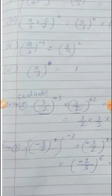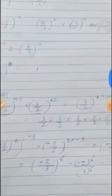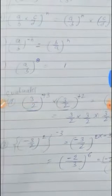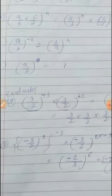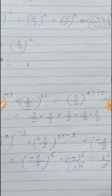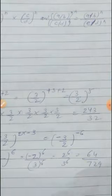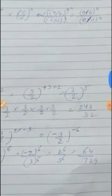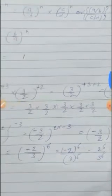Here one example is given: find the value of (3/2)^3 × (3/2)^2. The question is in multiplication form. The base 3/2 is the same in both terms, so the powers will be added: (3/2)^(3+2) = (3/2)^5. Now write in extended form — multiply 3/2 five times — giving 243/32.